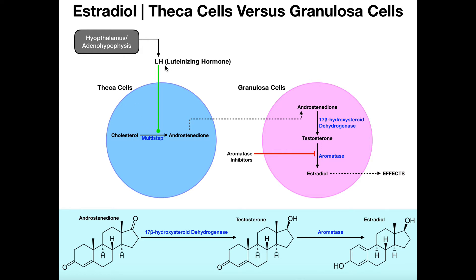One of the functions of luteinizing hormone in theca cells is to cause the synthesis of hormones. It's going to trigger this multi-step process where cholesterol, which is the parent steroid, is going to be converted into a molecule called androstenedione. What's important to understand about androstenedione is that it is not an estrogen — that's actually an androgen.